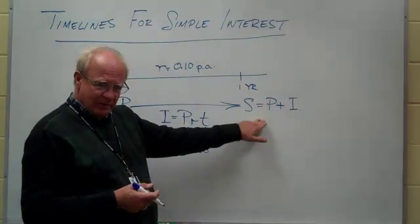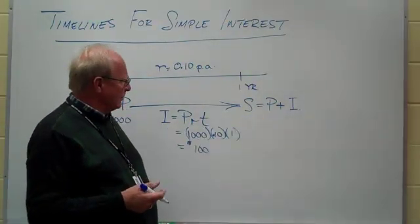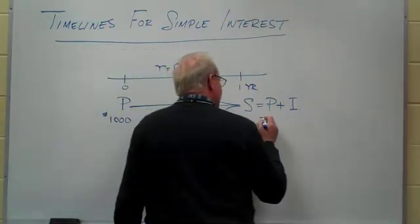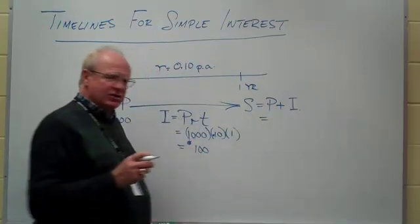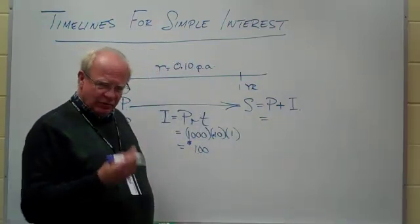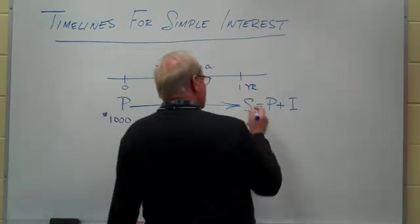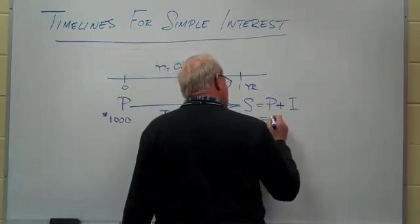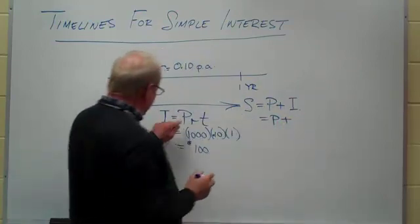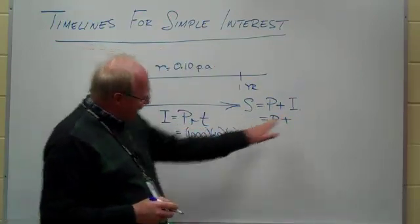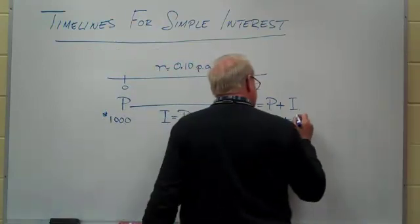Now just coming here for a minute, I don't want to make this clip too long. When we come over here, one thing mathematicians love, if you give them two formulas, they'll make at least a third one out of it. So what we've got here is S is P plus I, and they say oh that's great, because I is PRT. So they're going to substitute that in for the I, and they're going to say well that's really PRT.